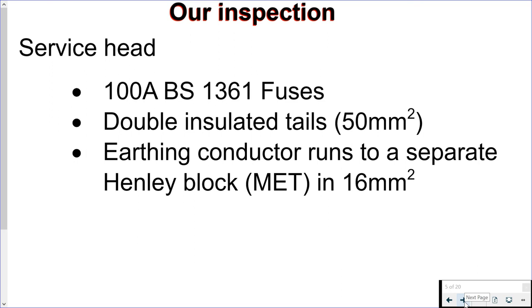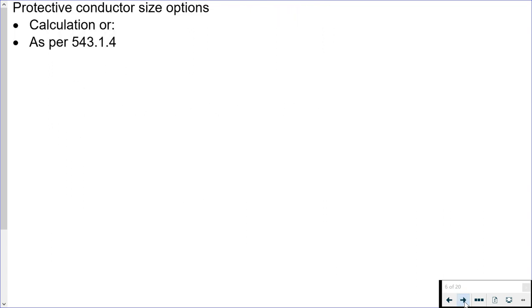We then have a look at the rest of our installation. It's a three phase system. We can see on the labeling on the service head that it is 100 ampere BS 1361 fuses. The cables coming from the service head into the meter and then back into our installation are 50 millimeter squared double insulated tails, and from the side of the service head we have an earthing conductor which is 16 millimeters squared.